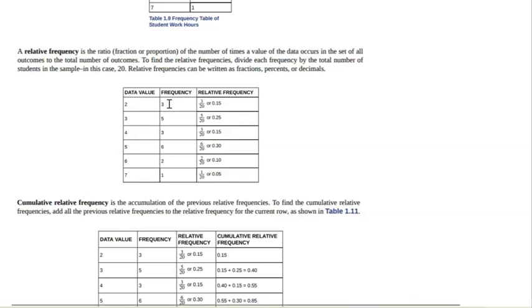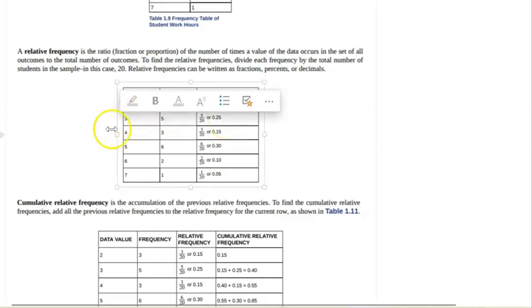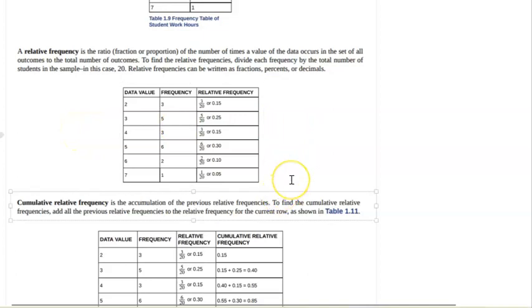It just makes sure that you understand that relative to the entire data set, 15% of the students work two hours versus 25%, so a quarter of the students work three hours. So that's really important to know, relative to the data set, how much weight does this data value carry?